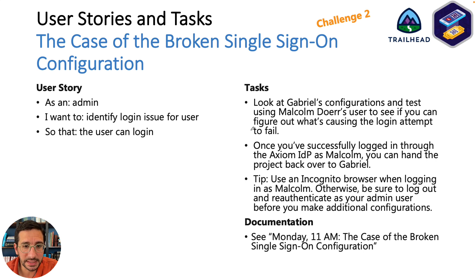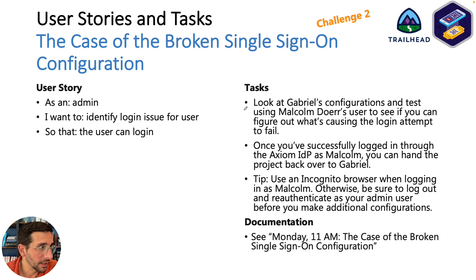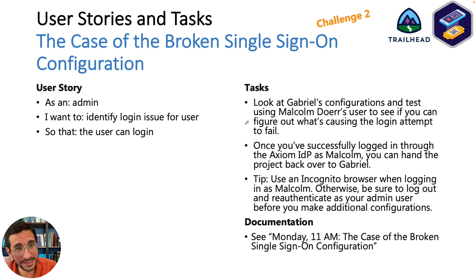Challenge two is the case of the broken single sign-on configuration. You need to identify what's broken. You're going to look at Gabe's configuration and test it using Malcolm's user to see if you can figure out what's causing the login attempts to fail. This one's a little bit more complicated. Once you've successfully logged in with the Axiom IDP as Malcolm, you can hand the project back over to Gabe.